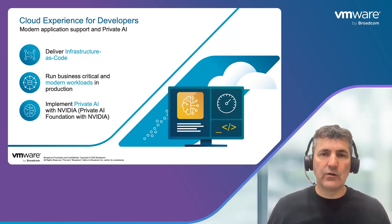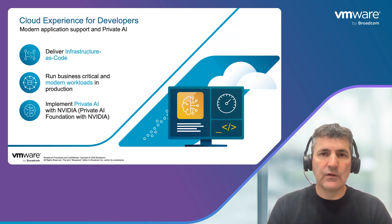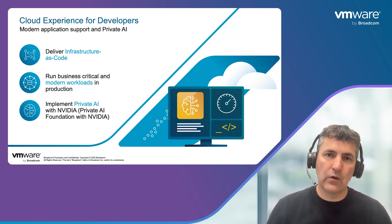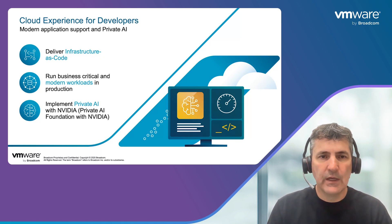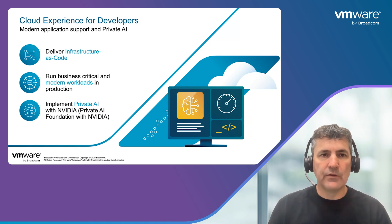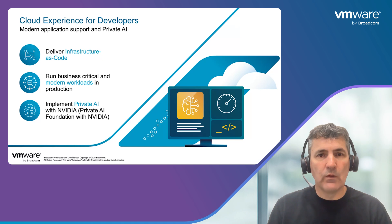For them, their requirements in terms of how they need to access a cloud platform is slightly different. They want to come in using tools that they know and are comfortable with, using API models, and to be able to self-provision the infrastructure so they can deploy their own Kubernetes clusters, their own application workloads, and their own set of services on top of this. That's all part of providing this cloud operating model for developers and platform engineers, making the private cloud just as easy to use as any public cloud offering.